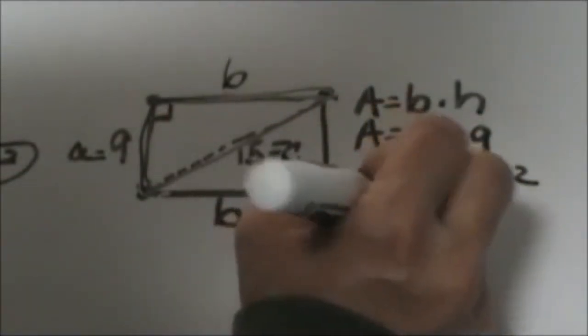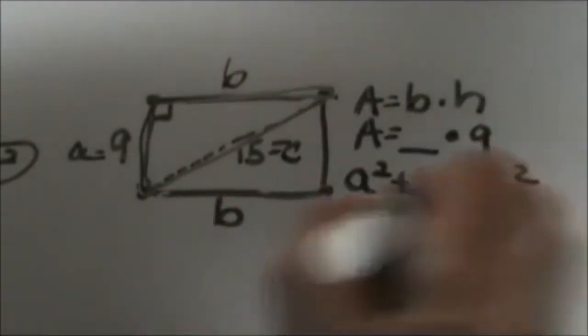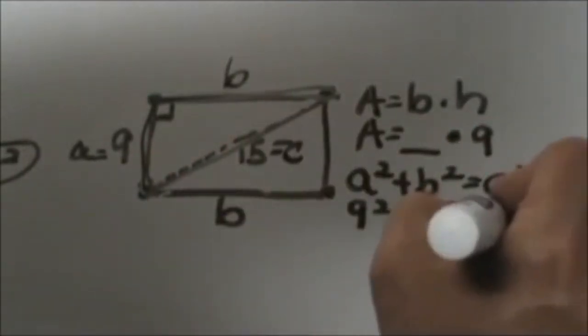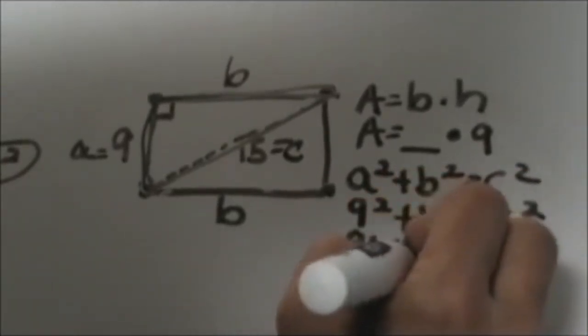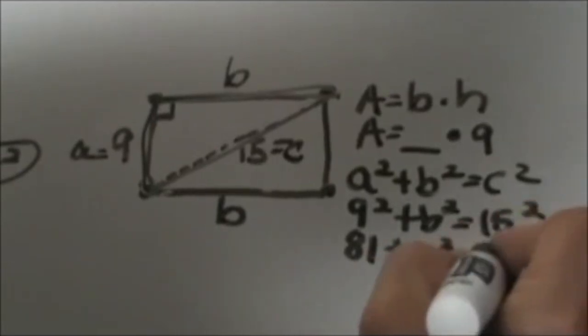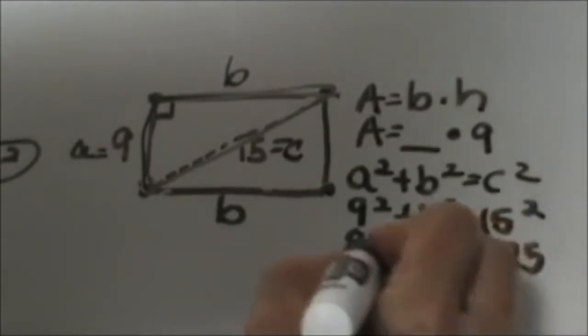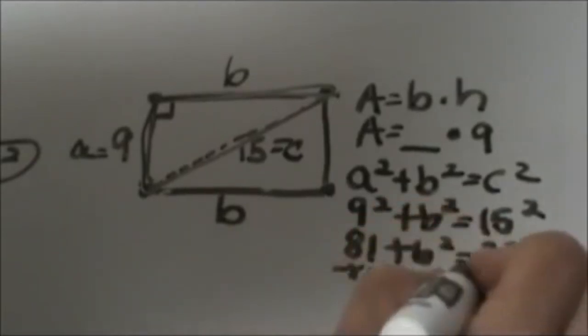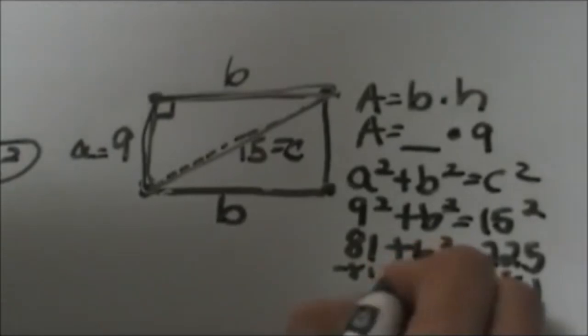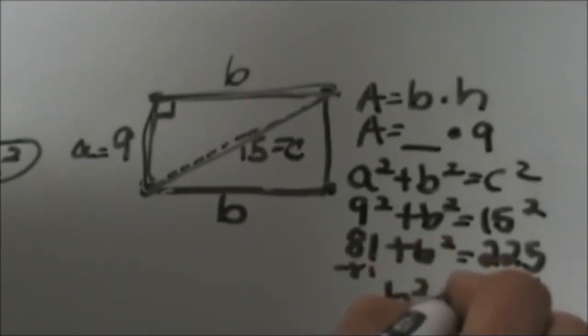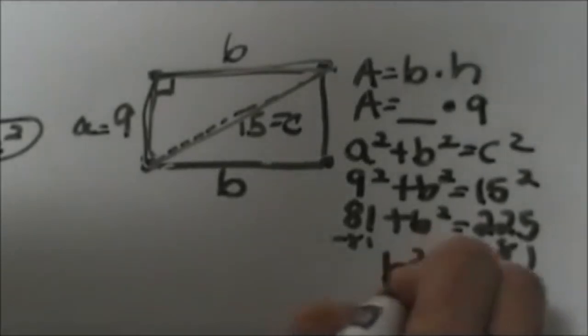So let's plug in a is 9, b is our unknown so we're going to leave b squared in there and then c is 15 so let's take 15 squared. So 81 plus b squared equals 15 squared is 225 so subtract 81 from both sides and we end up with b squared equals 144 so b must be the square root of 144 which is 12.